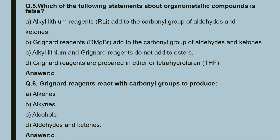Next question: Grignard reagents react with carbonyl groups to produce — they produce alcohols. So the correct option is C, that is alcohols.